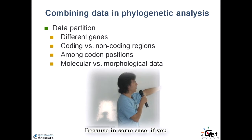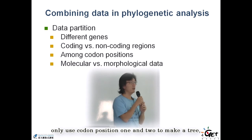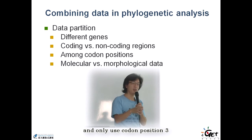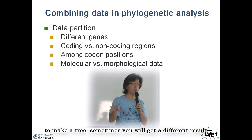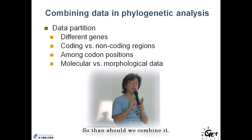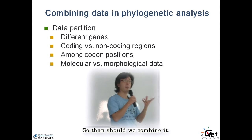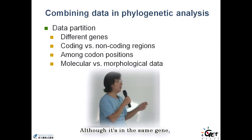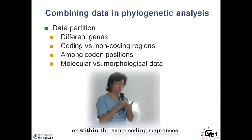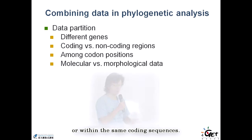In some cases, if you only use codon positions 1 and 2 to make a tree, and only use codon position 3 to make a tree, sometimes you will get a different result. So then, should we combine them, even though they're within the same gene or within the same coding sequences?